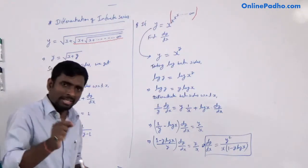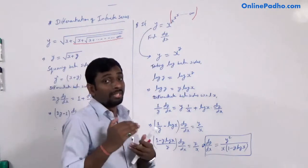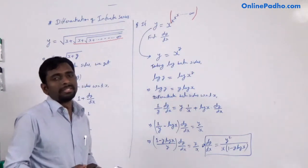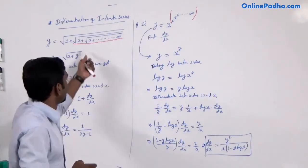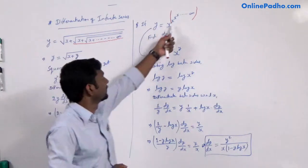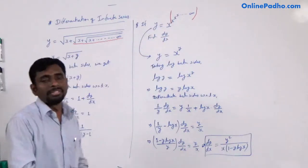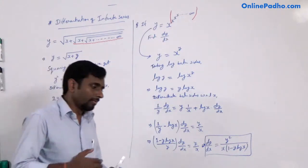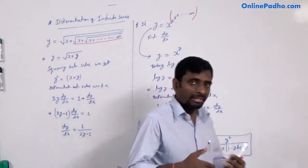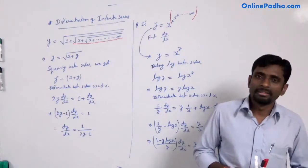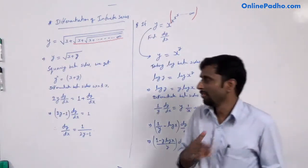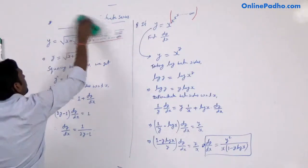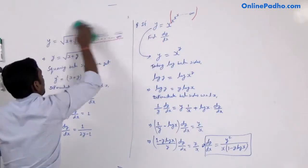In infinite series, it is very simple: first you need to simplify that function, eliminate the infinite series, and then we can differentiate. When you eliminate the infinite series, the question becomes very straightforward and you can differentiate it.